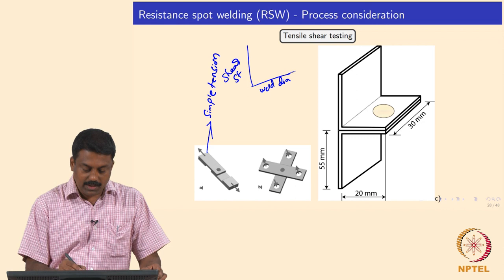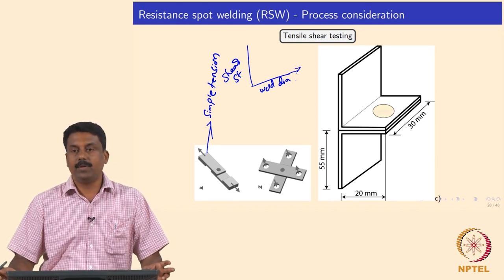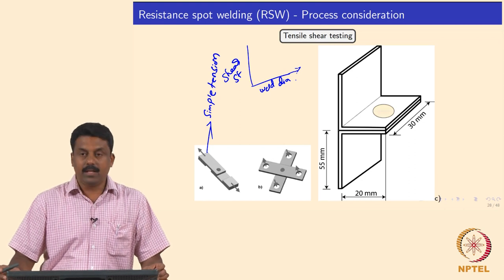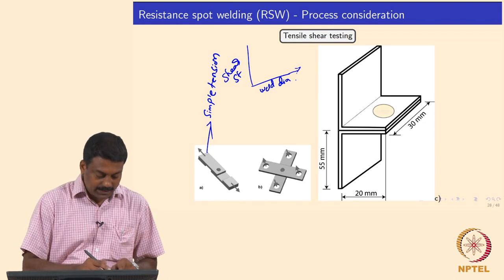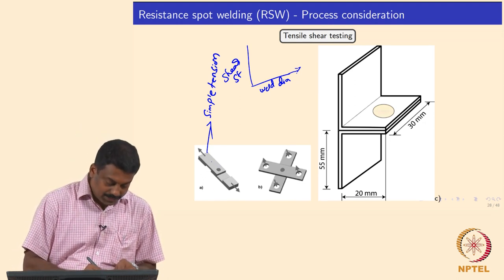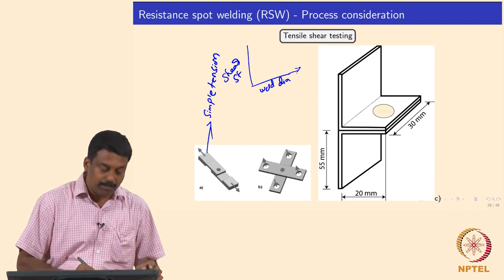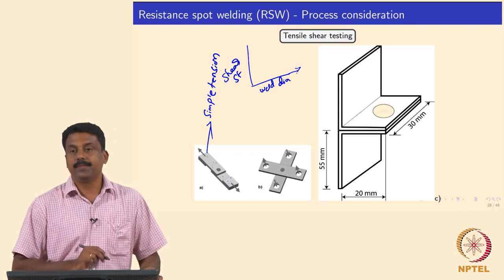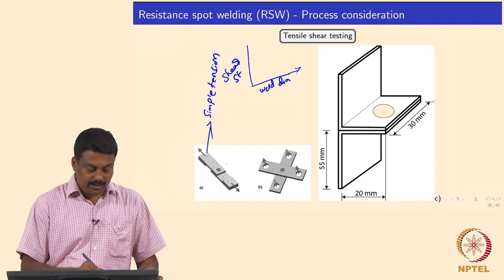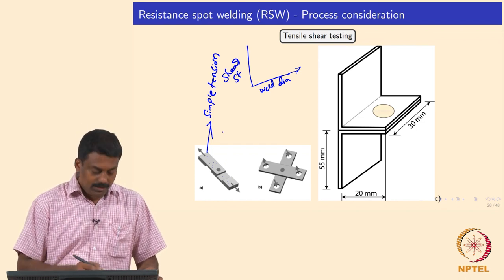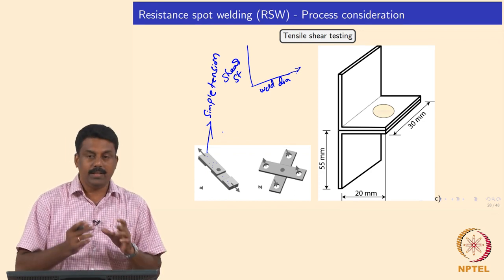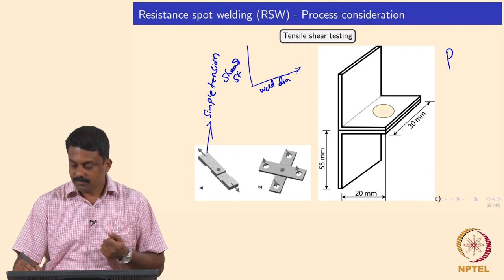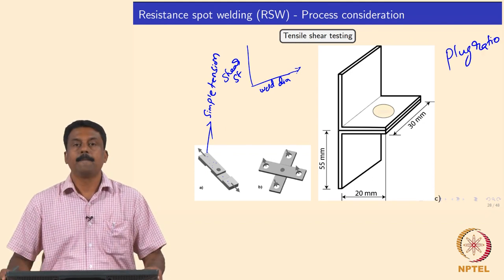Generally we plot shear strength as a function of weld diameter to identify which weld diameter gives the best strength. Apart from strength, we also look at other important parameters. When deforming the sample under load, the load is applied across the entire component, so measuring ductility gives ductility of the entire sample, not the weld alone. Therefore, to identify the actual property of the weld, apart from strength and ductility, we also look at the plug ratio.